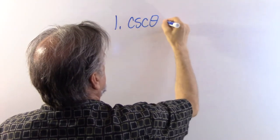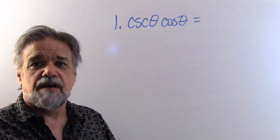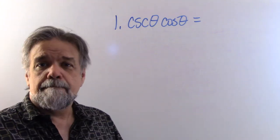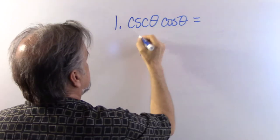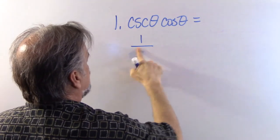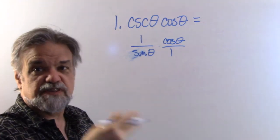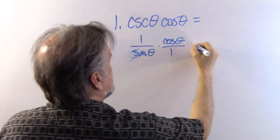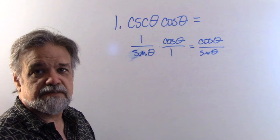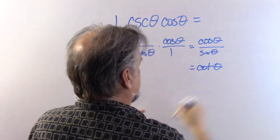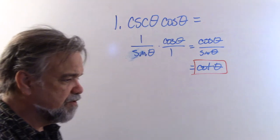Number one says the cosecant of theta times the cosine of theta. In a situation like this, put everything in terms of sines and cosines. Cosecant is one over sine of theta, and cosine is cosine of theta over one. Multiplying gives cosine of theta over sine of theta, and cosine divided by sine is just the cotangent of theta.